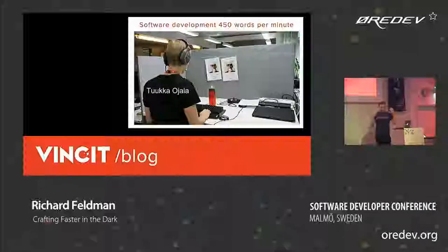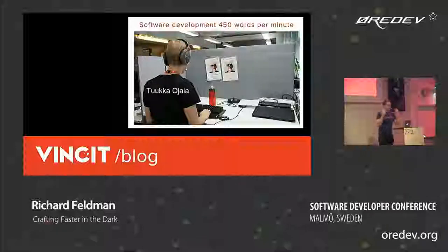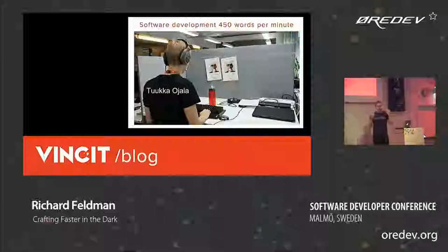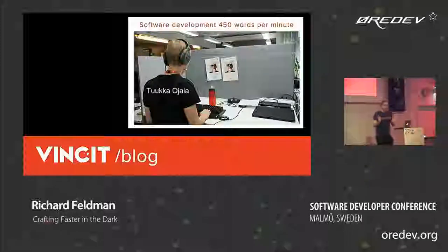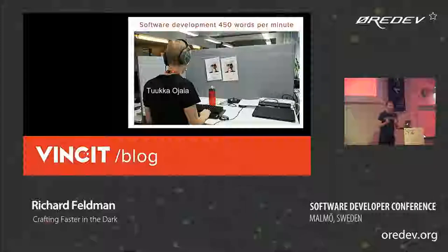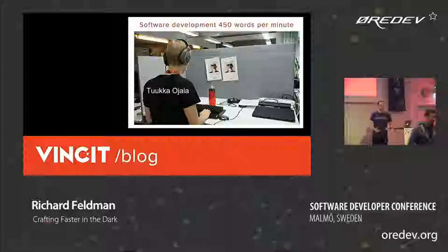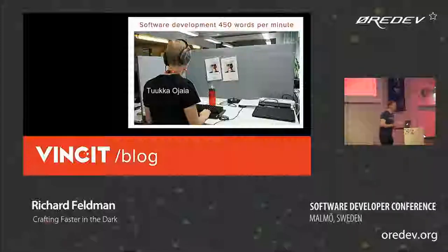This is because this particular developer is blind. He wrote this blog post — absolutely fascinating, I highly recommend reading it on his company's blog — called Software Development at 450 Words Per Minute. He explains how he programs, and basically what he hears in those headphones is text-to-speech, reading code to him really, really fast. If you listen to it, it just sounds like absolute gibberish, but he's actually productive doing this.